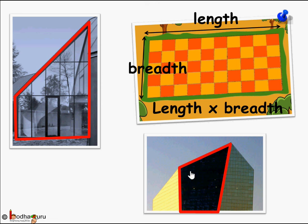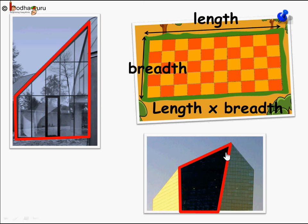Rectangle and square are also quadrilaterals, but they have specific properties — a square has all four sides the same and all four angles equal to 90 degrees. But here is a quadrilateral with four sides where not all sides are the same size. So let's try to find out how we find the area of any generic quadrilateral.